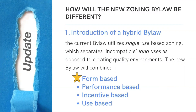In doing so, the new Bylaw will attempt to foster quality environments through a shift from focusing only on the separation of land uses to paying more attention to the built form and how buildings interact with the public realm. We won't spend any time talking about performance or incentive-based zoning, but more information is available on the Engaged Edmonton platform. Instead, we will spend a little bit of time talking about form-based zoning.